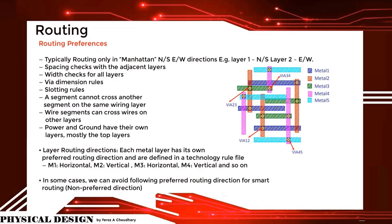Routing preferences: typically routing is done in the Manhattan direction — north to south, east to west. Spacing checks are performed with adjacent layers, width checks for all layers, via dimension rules, and slotting rules apply. A segment cannot cross another segment on the same routing layer, but wire segments can cross wires on other layers. Power and ground have their own layers, mostly the top layers.